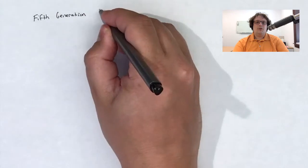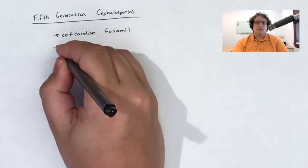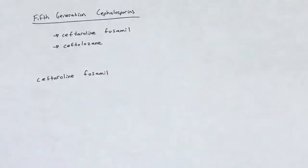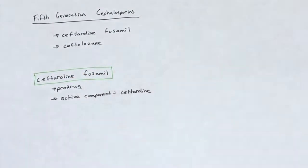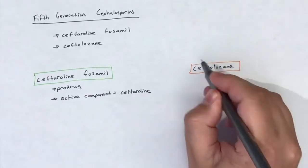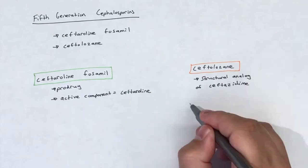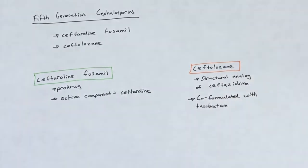There are two fifth-generation cephalosporins: ceftaroline fosamil and ceftolozane. Ceftaroline fosamil is a prodrug and its active metabolite is ceftaroline. Ceftolozane is a structural analog of the third-generation cephalosporin ceftazidime and is normally found co-formulated with a beta-lactamase inhibitor, tazobactam.